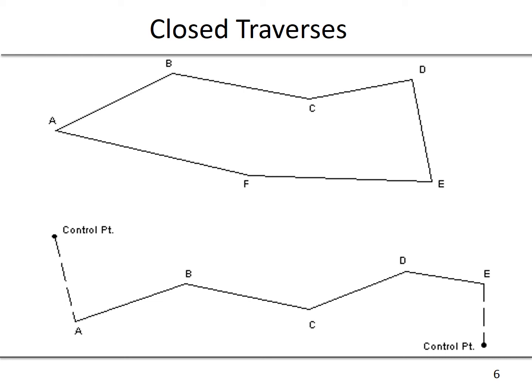The opposite is an open traverse. An open traverse is a survey or an alignment that doesn't close within sufficient accuracy or doesn't tie into two control points.